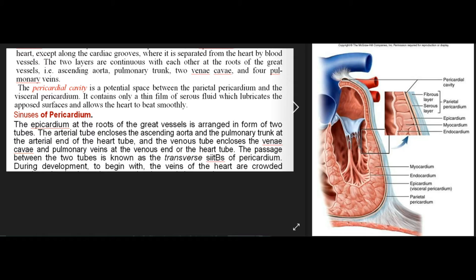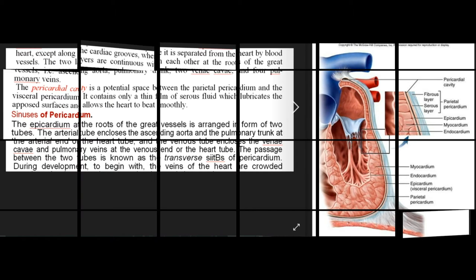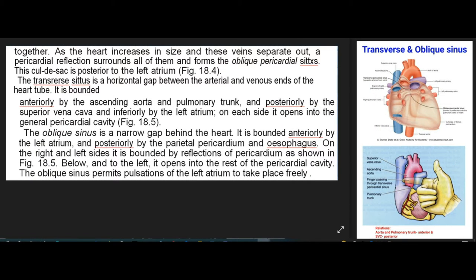Sinuses of pericardium: The epicardium at the roots of the great vessels is arranged in two tubes. The arterial tube encloses the ascending aorta and pulmonary trunk; the venous tube encloses the venae cavae and pulmonary veins. The passage between these two tubes is the transverse sinus of pericardium. The transverse sinus is a horizontal gap bounded anteriorly by the ascending aorta and pulmonary trunk, posteriorly by the superior vena cava, and inferiorly by the left atrium; on each side it opens into the general pericardial cavity.